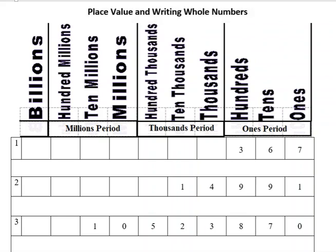Hello, I'm Carly McEvoy. I'm talking about place value and writing whole numbers today. Place value starts to the right and we have the ones place. Anytime you see a number in the ones place, the value is just a one. So seven is equal to seven dollars.